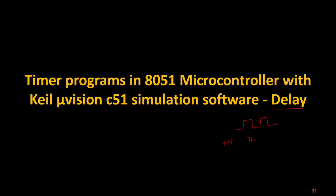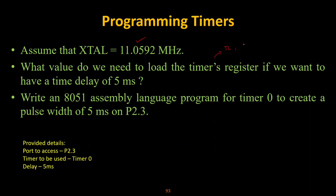To understand it better, we can go directly to the program. The program assumes a crystal clock frequency of 11.0592 MHz, which is commonly used. We need to determine what values to load into the timer registers TL0 and TH0, so that they will create a time delay of five milliseconds.